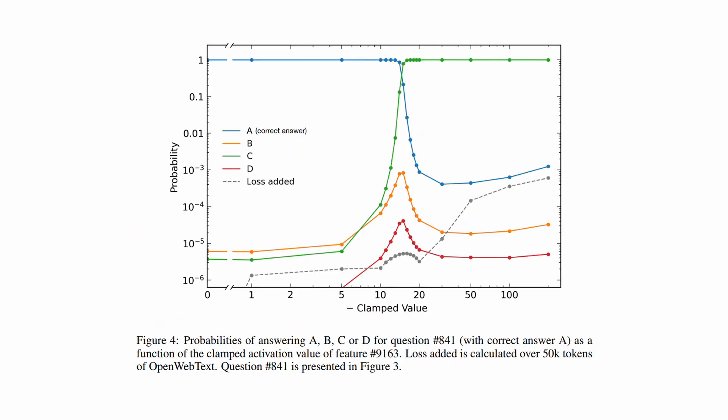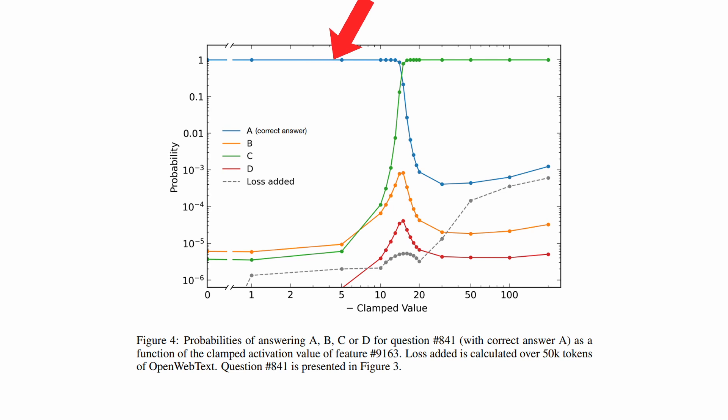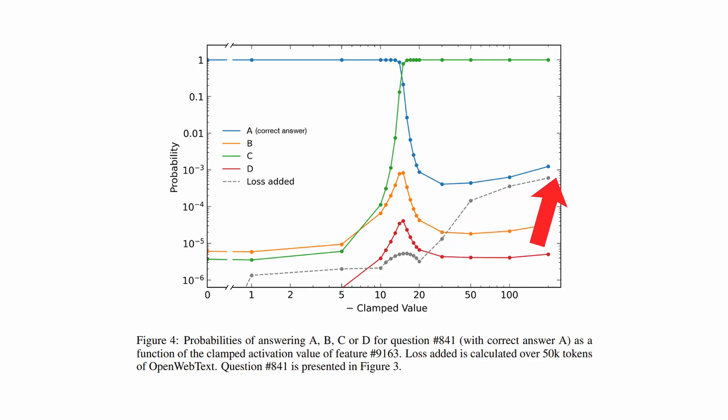First, let's look at using only one feature to steer Gemma 2B Instruct. As the negative clamping of the biology-related feature increases, the probability that the model picks the correct answer to a biology question decreases from 100% to practically 0. It's also interesting to see that after a clamping value of 30, there isn't any extra return, and in fact the cross-entropy loss of the model starts rising steeply. Think of loss added as measuring how much our intervention is breaking the model's normal abilities to generate text.